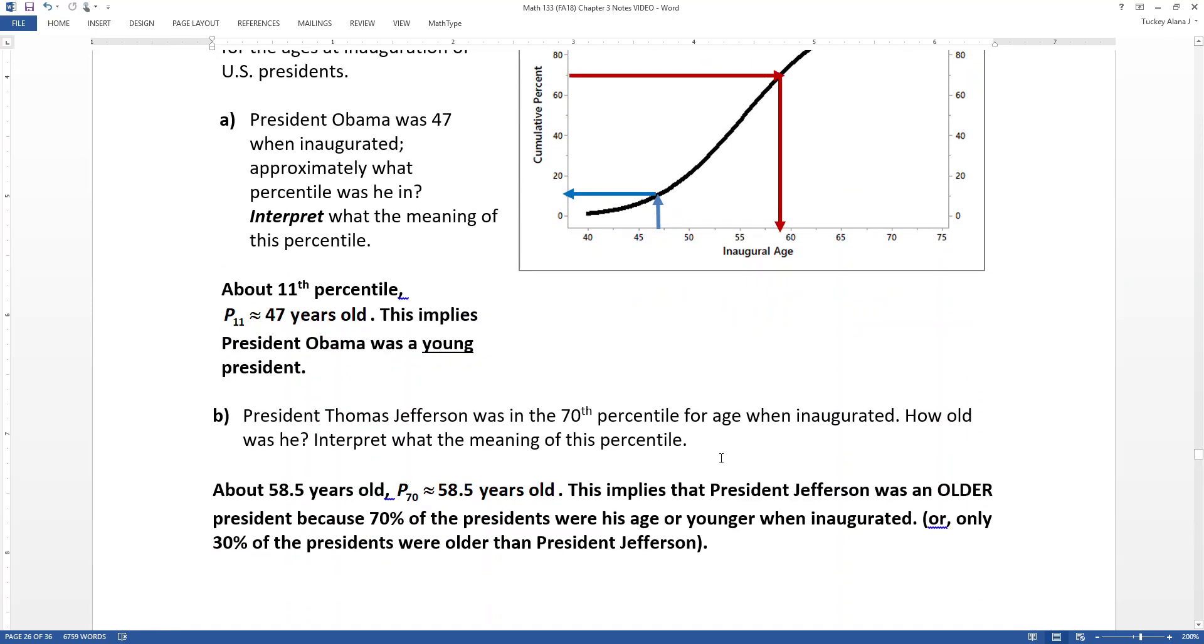So it's important not only that you can read this graph, but that you can make that interpretation. That you know that being on the 70th percentile means you're on the high side. Being in the 11th percentile means you're on the low side. Either way, the percentile gives you a measure of where you fall or where, in this case, President Obama and President Jefferson fall in relation to the group of all presidents.